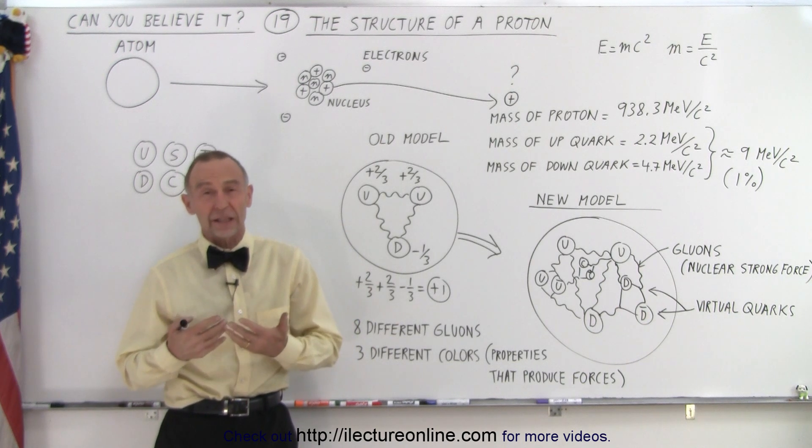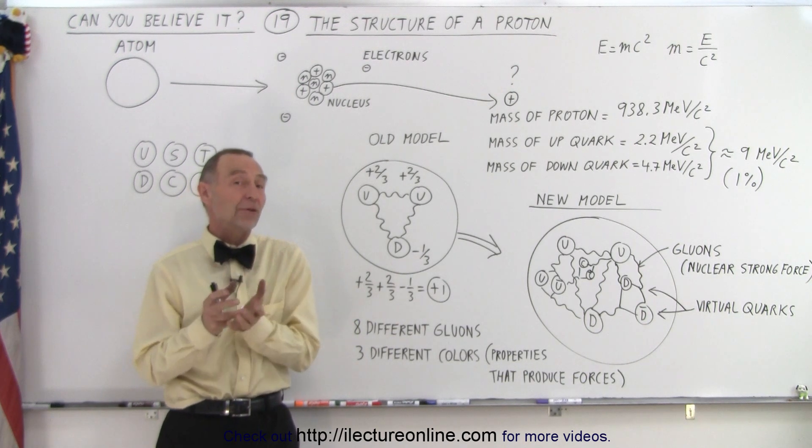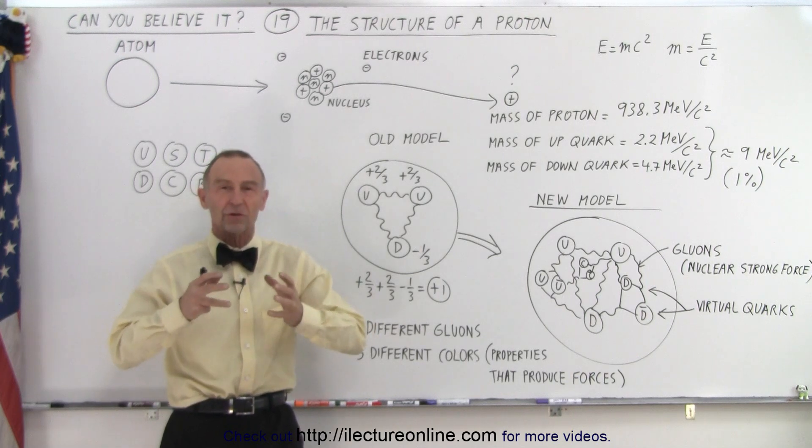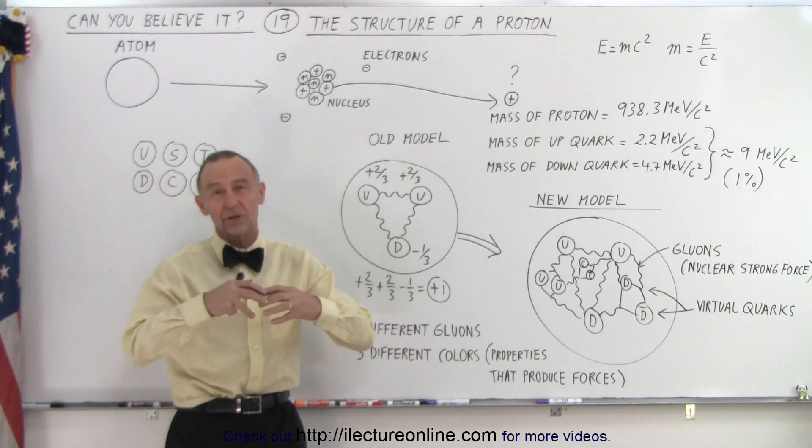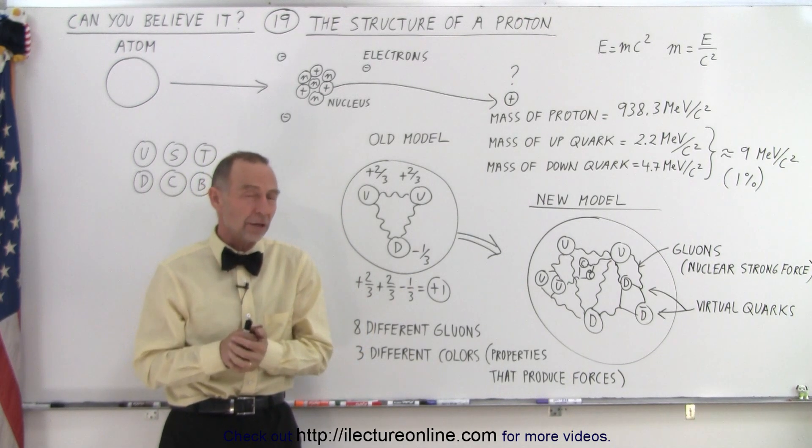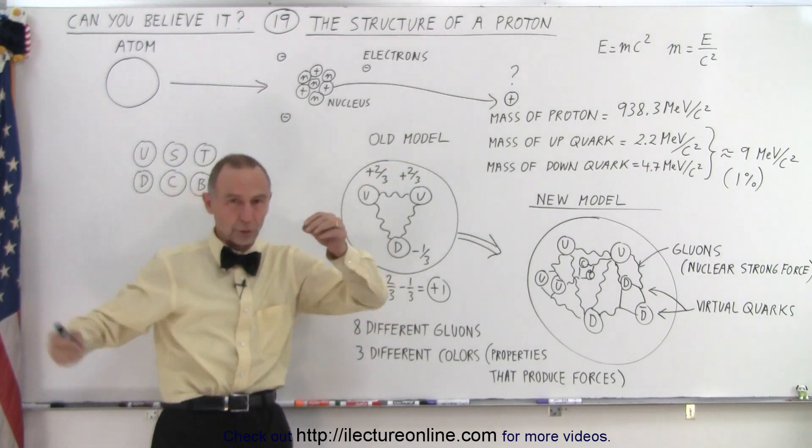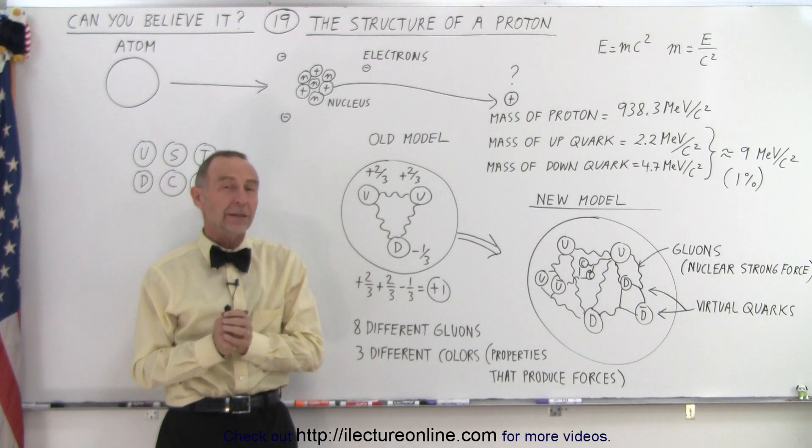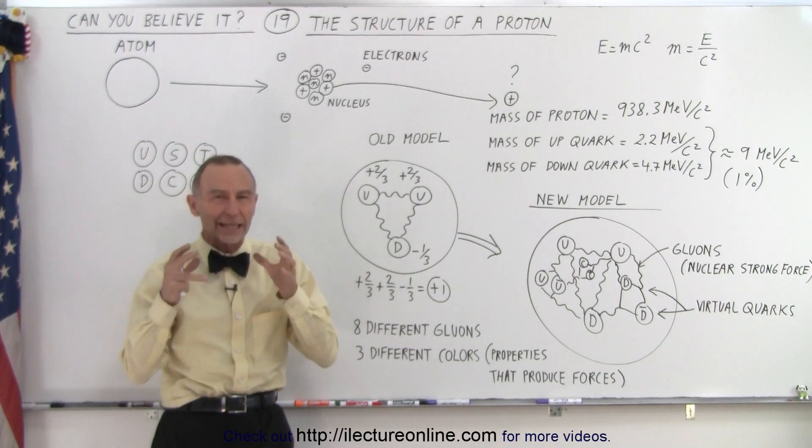So when we began to understand that there were atoms, and then we began to understand that the atoms were structured with the nucleus at the center, which contained the neutrons and the protons, and then we had the electrons whirling around the nucleus, well, that became more complicated, but we could handle that.